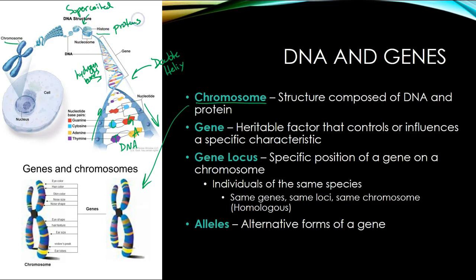The double helix is going to wrap itself around histone proteins. Histone proteins are in a set of eight, which makes up an octamer of histone proteins. The DNA is going to wrap itself around the eight histone complex twice to create a nucleosome. Those nucleosomes are going to supercoil, wrapping themselves around each other like an old-fashioned corded phone. Why are they coiled? It saves space and it's much easier to organize. They're going to become supercoiled, and that supercoiled chromatin is going to supercoil even further to create a chromosome.